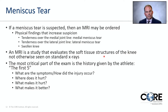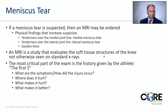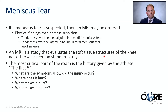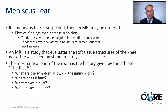An MRI is a study that evaluates the soft tissue structures of the knee not otherwise seen on x-rays. Patients often ask if a meniscus tear can be seen on x-rays — it cannot; we need an MRI. The most critical portion of the exam is the history given by the athlete — I call this 'the first five.' Within the first five minutes of speaking to the patient, we have a pretty good idea of what's going on. The questions are: What are the symptoms? How did the injury occur? Where does it hurt? What makes it hurt? And what makes it better?